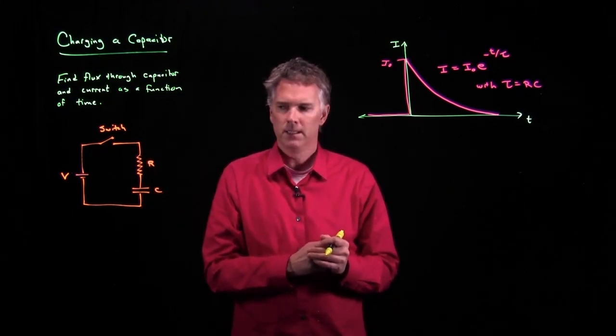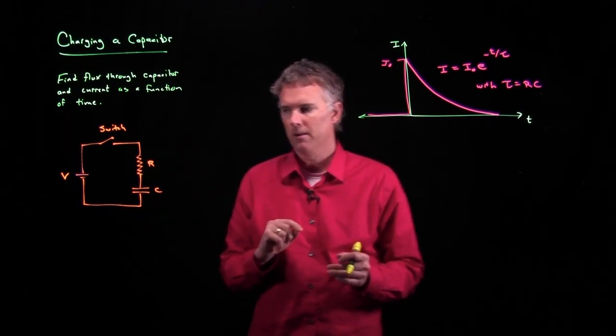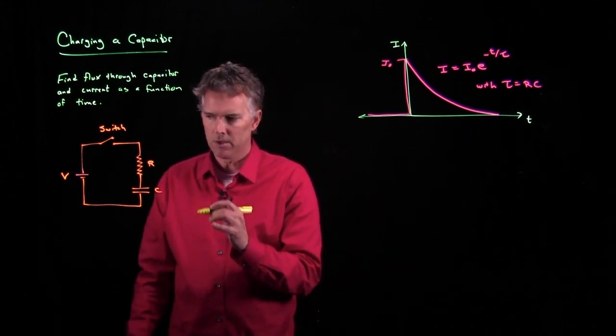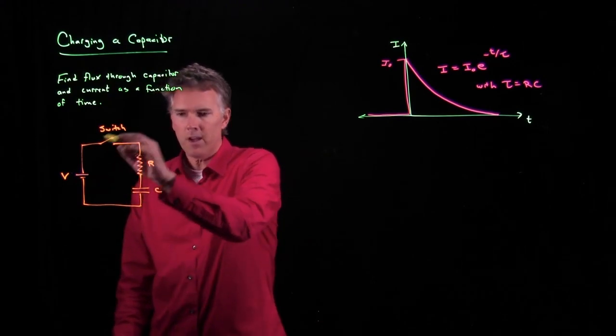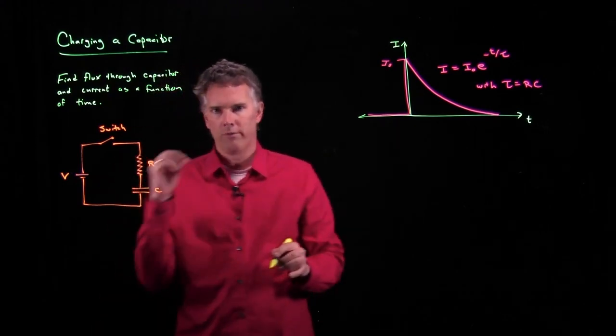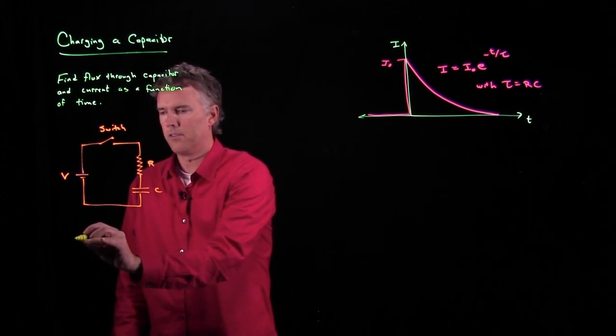Well, to think about that we need to do two things. One, we got to understand the circuit here, and if we go back to Kirchhoff's laws, Kirchhoff's laws says if I go once around the circuit, all the voltage drops have to add up to zero. Okay? So let's see what we do.